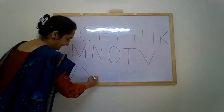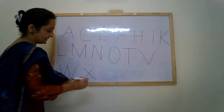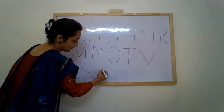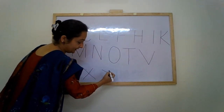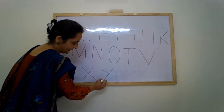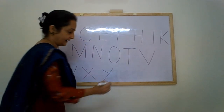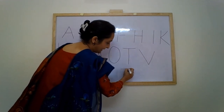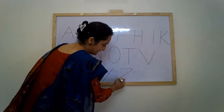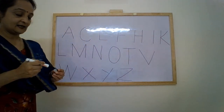Two slanting lines crossing each other — is letter X. A small slanting line and a long slanting line — is letter Y. Sleeping line, slanting line, slanting line, sleeping line — is letter Z.